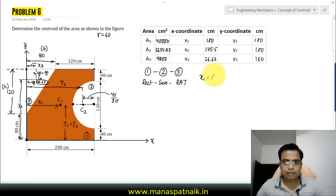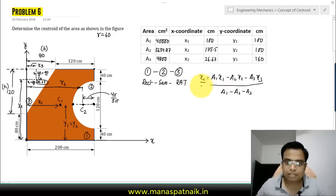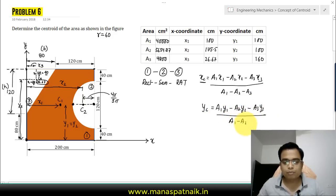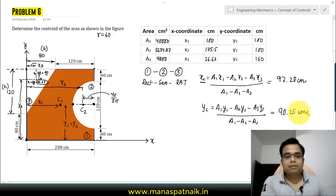xc will be equal to A1×X1 minus A2×X2 minus A3×X3 divided by A1 minus A2 minus A3. Similarly for yc, simply replace x by y's. When you put all these values into this equation, xc is 97.28 centimeters and yc is 90.25 centimeters.